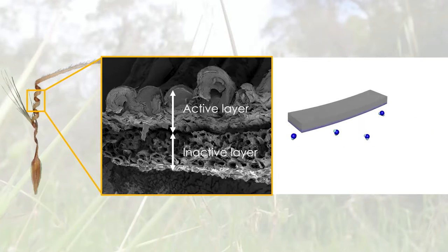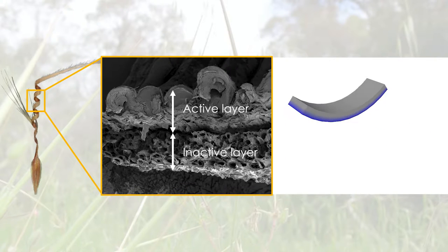Humidity variation controls all these processes. The seed tails consist of two layers, one of which responds to humidity while the other not. When wet, the moisture sensitive layer swells by absorbing water molecules, causing the tail to bend toward the inactive layer. The opposite sense of bending occurs when dry.